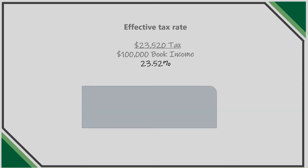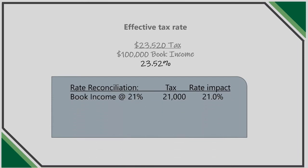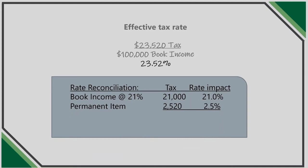We can reconcile the difference by isolating the impact of the permanent item. Book income at 21% would have created a tax expense of $21,000. The permanent item resulted in an additional tax of $2,520. If you divide the $2,520 by book income of $100,000, it equates to a 2.5% tax impact. Adding the two taxes together and the two percentages, we get back to our calculated tax expense of $23,520 and a tax rate of 23.5%.